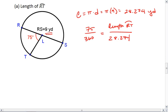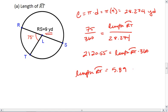Again, cross multiply. I get 75 times 28.274, which gives me 2120.55 equals the length of RT times 360. To find the length of RT, I'm going to divide both sides by 360. So I get 2120.55 divided by 360, gives me 5.89 yards.